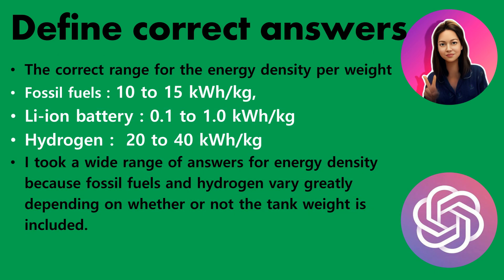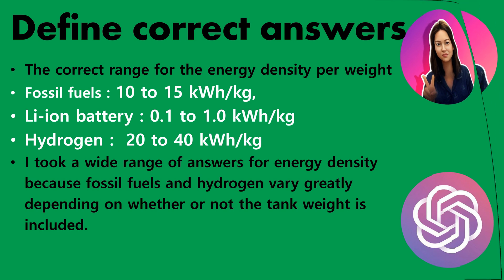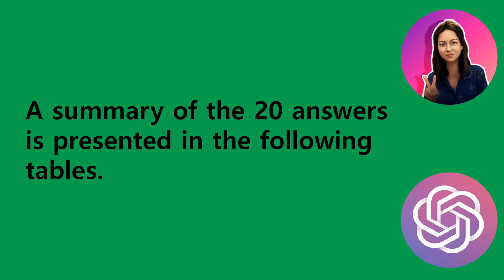I define the correct range for energy density per weight of fossil fuels as 10 to 15 kilowatt hours per kilogram, 0.1 to 1.0 kilowatt hours per kilogram for lithium batteries, and 20 to 40 kilowatt hours per kilogram for hydrogen. I took a wide range of correct answers for energy density because fossil fuels and hydrogen vary greatly depending on whether or not the tank weight is included. A summary of the 20 answers is presented in the following tables.